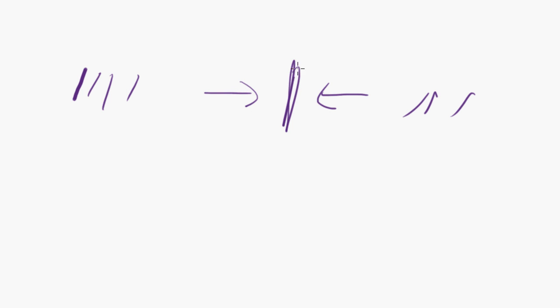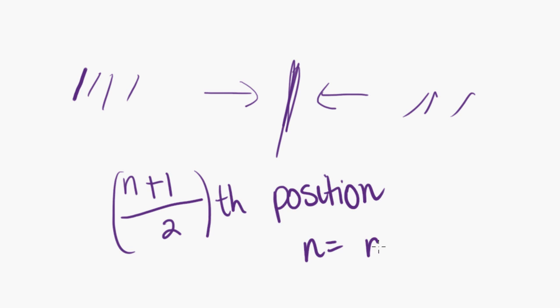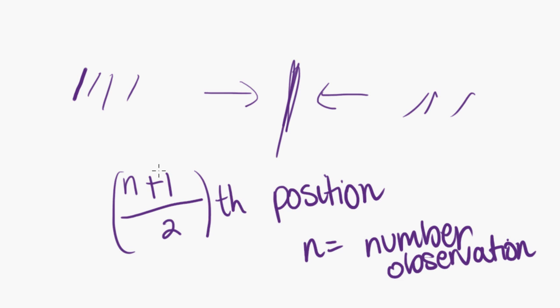So that's one method of finding the median — cross some from the bottom, some from the top, and work your way into the middle until you find the halfway point. There's another method you could use if this one doesn't really work for you. That is to find the n plus 1 over 2 position, and I'll tell you what I mean by that.